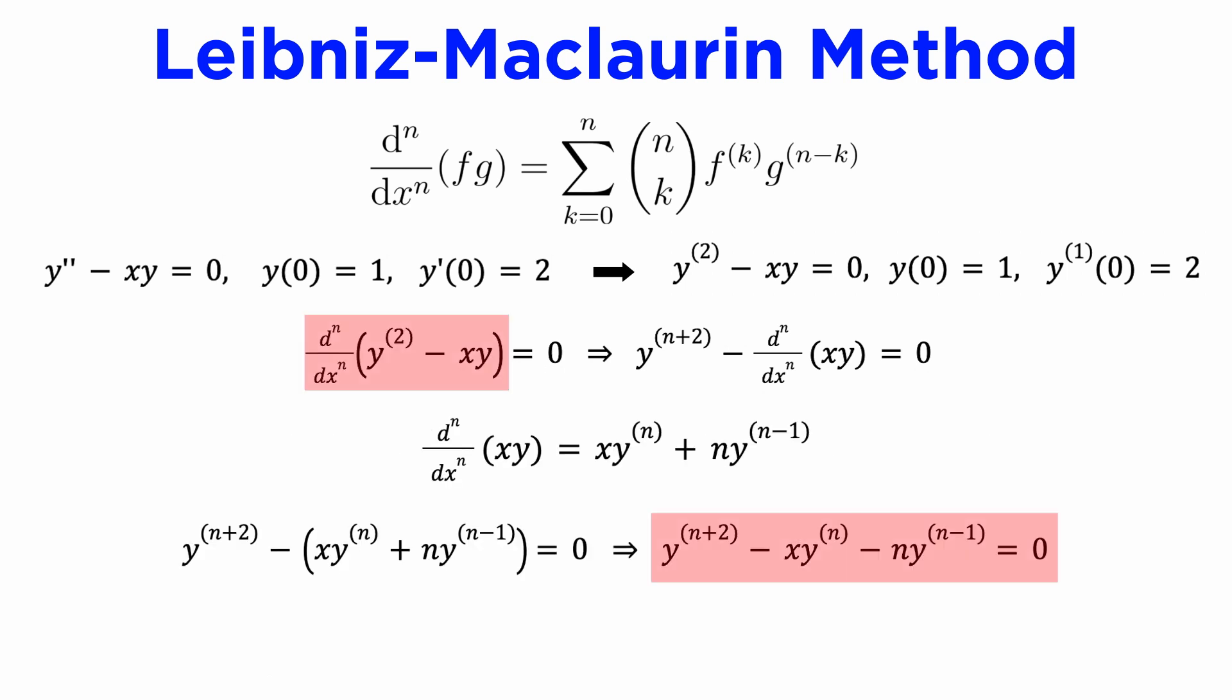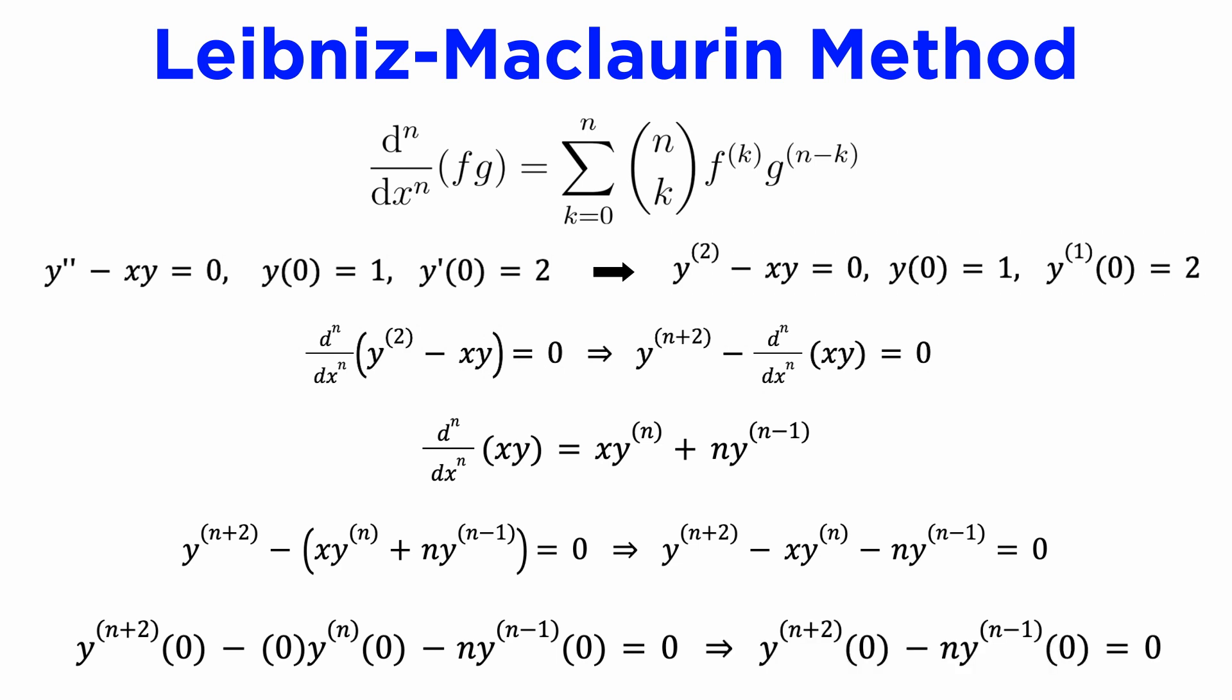Continuing from where we left off, we now have our DE that has been differentiated n times. This DE is valid for all values of x, so now we just plug in x equals zero, as this is where we are expanding our power series. The middle term goes away, and we get the following equation, where all derivatives of y are evaluated at x equals zero.